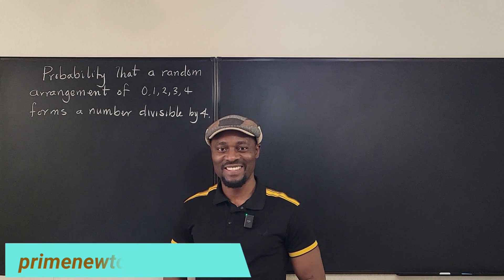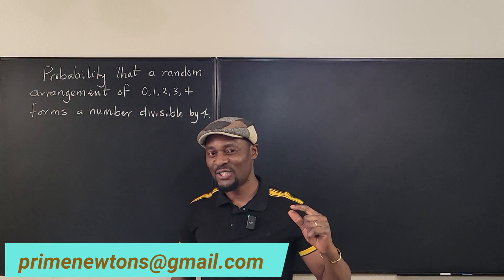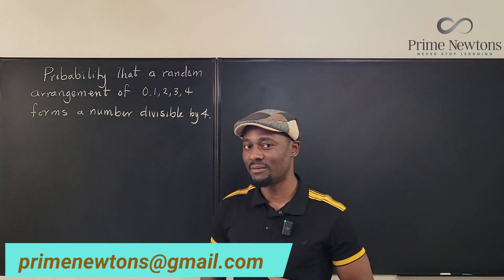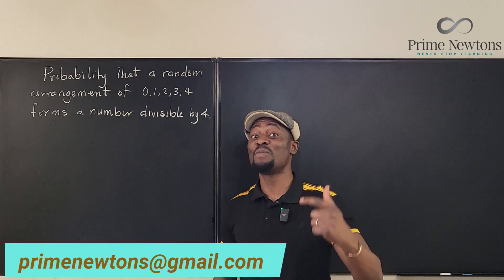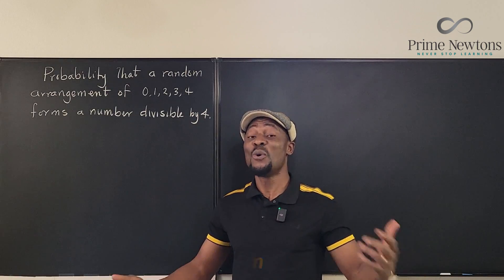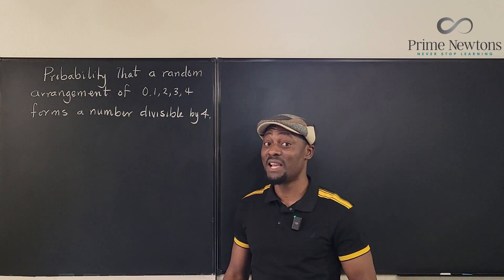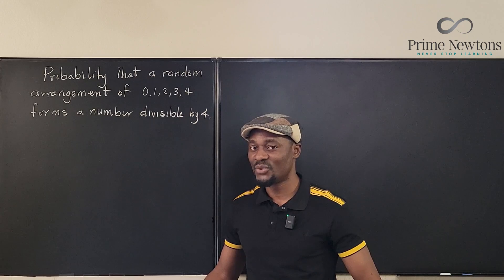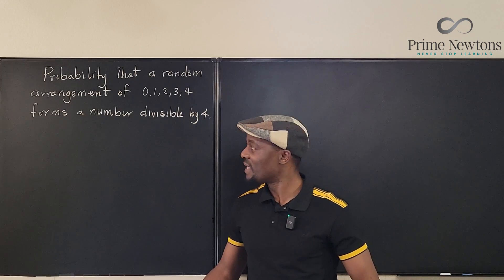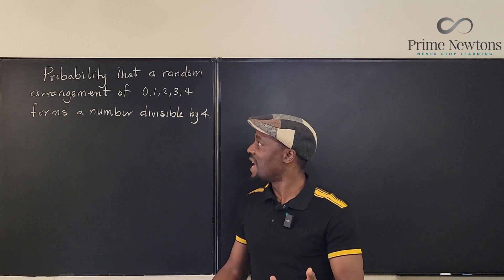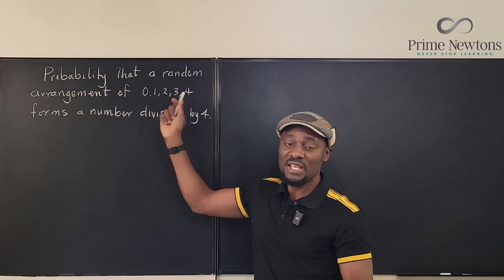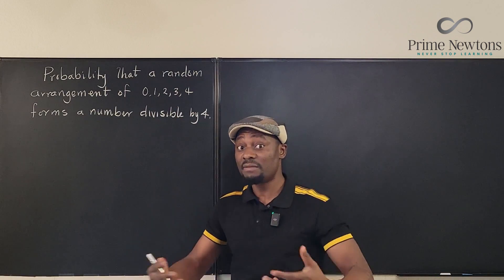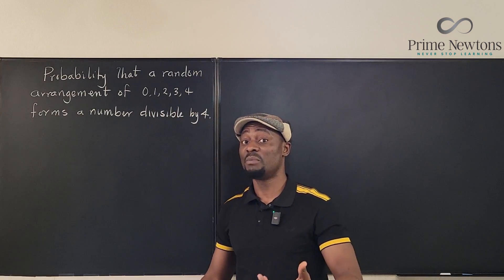Welcome to another video. Let's do our first probability question on this channel. If this is your first time watching any of my videos, it is the first time I would be attempting a probability problem. What is the probability that if you randomly arrange these five digits, it's going to form a five-digit number that is divisible by four?